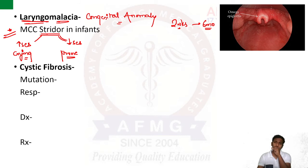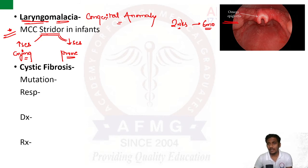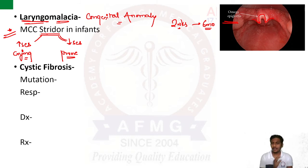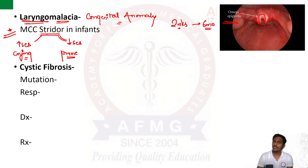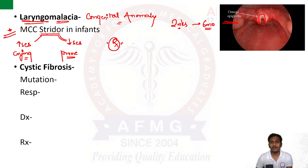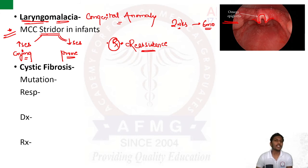For diagnosis, a flexible laryngoscopy is performed — on which an omega-shaped epiglottis is seen in cases of laryngomalacia, and this image has appeared multiple times in examinations. Laryngomalacia is a self-limiting condition; no treatment is required. If reassurance is among the options, that would be the best answer — reassure the parents that it is self-limiting and will eventually subside by itself.